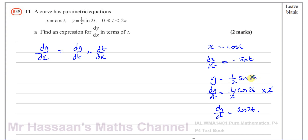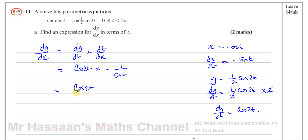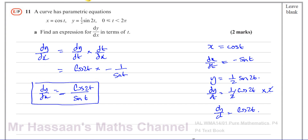So half times sine 2t becomes a half times cosine 2t times 2. Therefore, dy/dx equals dy/dt, which is cosine of 2t, times dt/dx — the reciprocal — which gives minus 1 over sine t. So you end up with minus cosine 2t divided by sine t. This is dy/dx in terms of t. There's a minus sign — that's important.